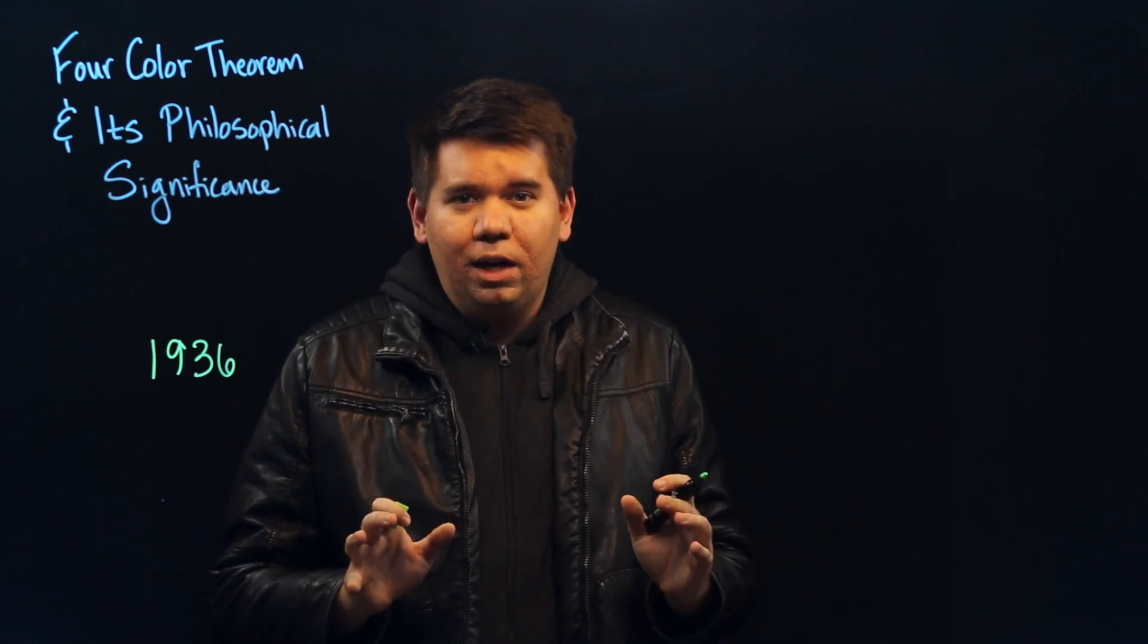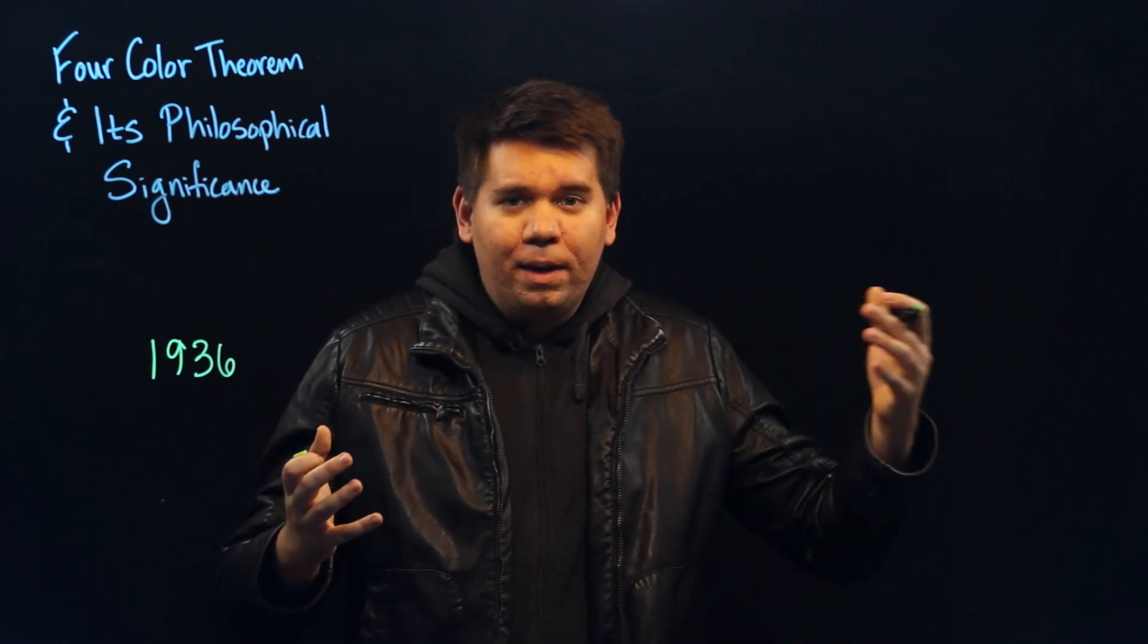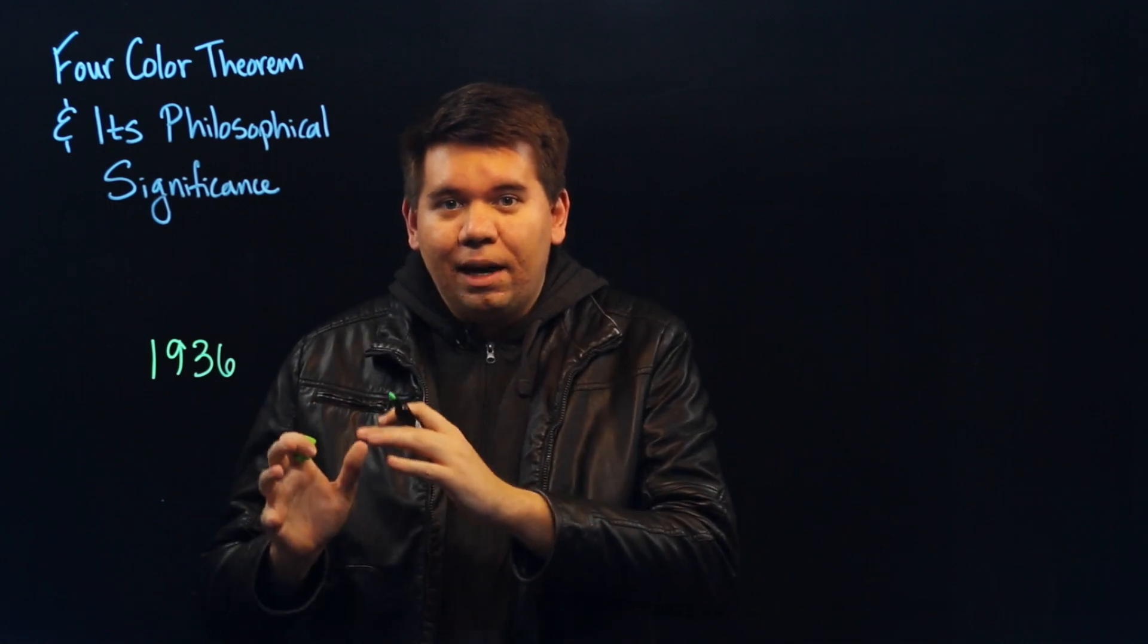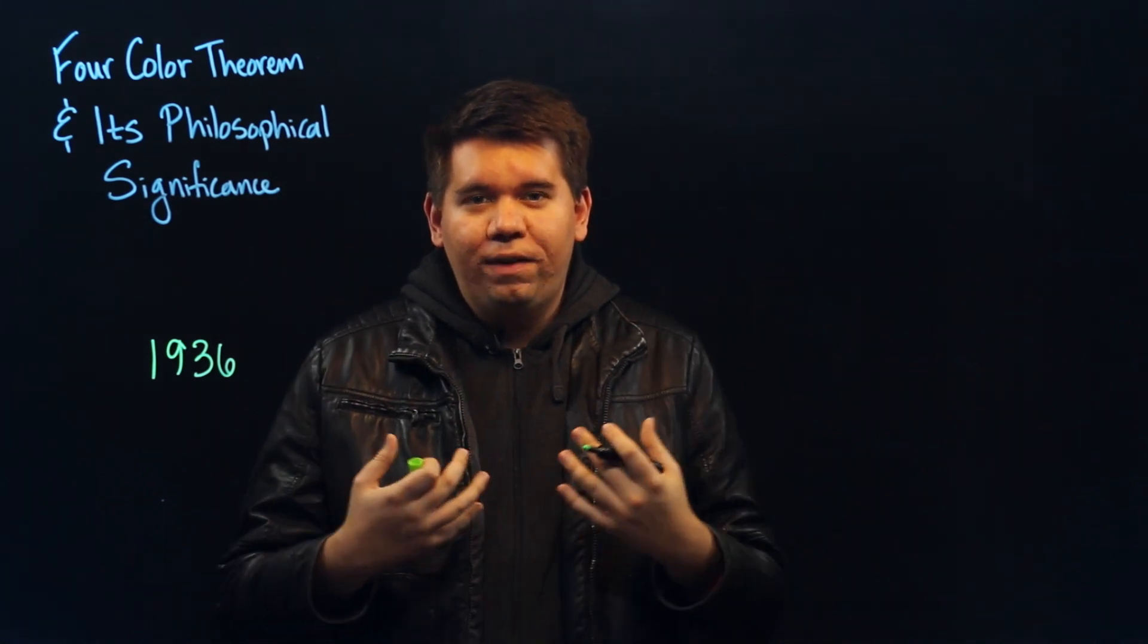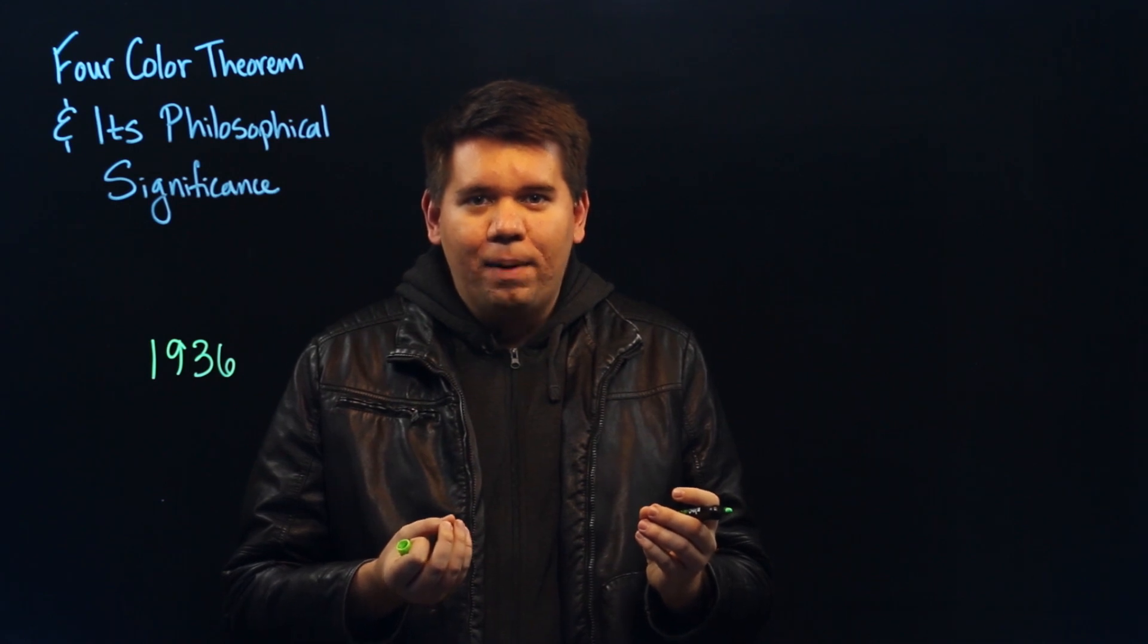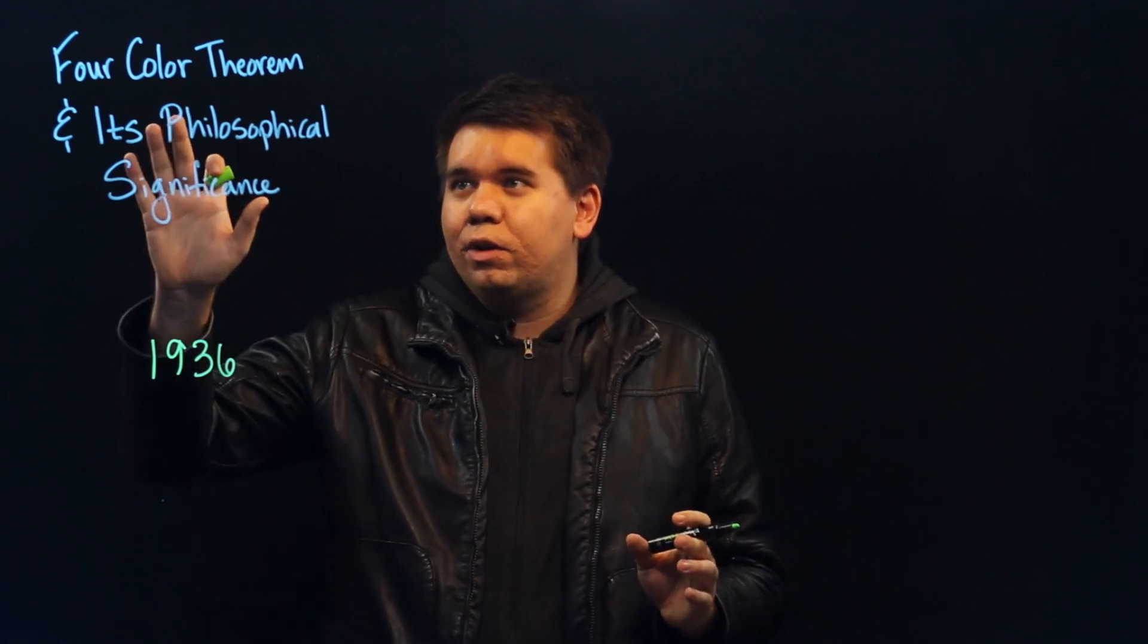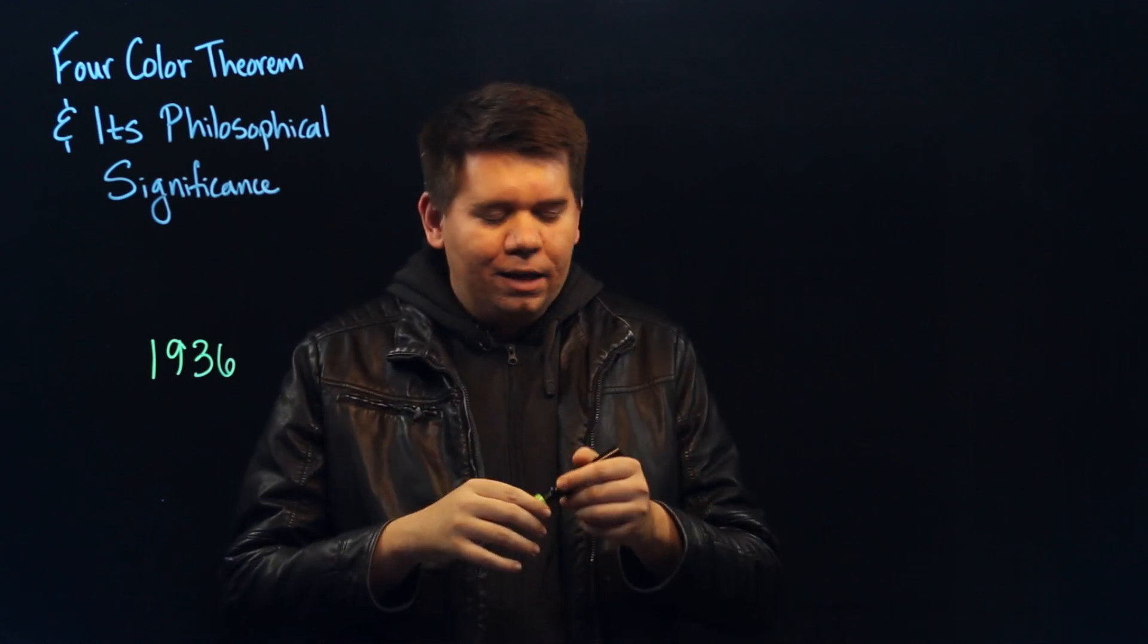It's not just an issue of, could have the computer made a mistake? After all, you can have independent computers and independent programs verify the result. And we know that humans can make mistakes too. After all, Kemp had published a proof that was accepted by the mathematics community for a decade before a flaw was found in it. Rather, there were some more subtle questions being asked about what is the philosophical significance of this. One such paper that was published in 1979 entitled The Four-Color Theorem and Its Philosophical Significance posed the question by giving an analogy.